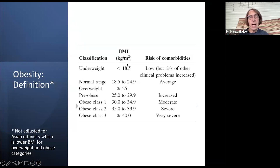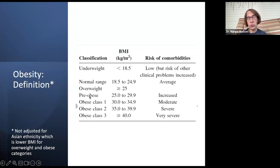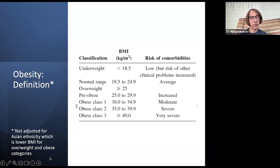Normal or underweight is BMI below 24.9. Overweight is anything over 25 — sometimes called pre-obesity — from 25 to 29.9. Then we have three classes of obesity: class 1, 30 to 34.9; class 2, 35 to 39; and class 3, greater than 40. This is important because some insurances require different BMIs for patients to qualify for various treatments.